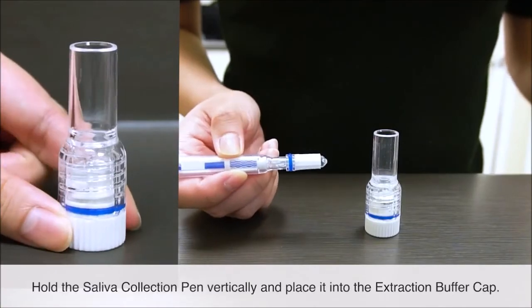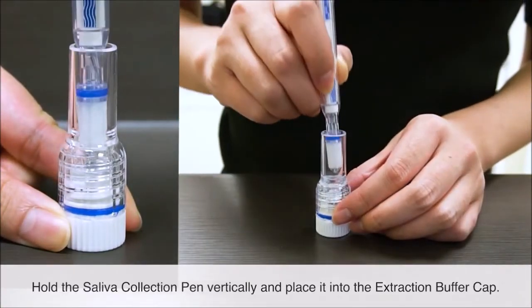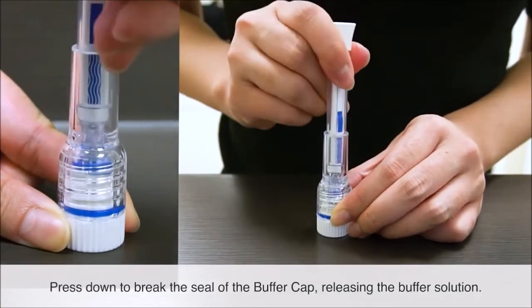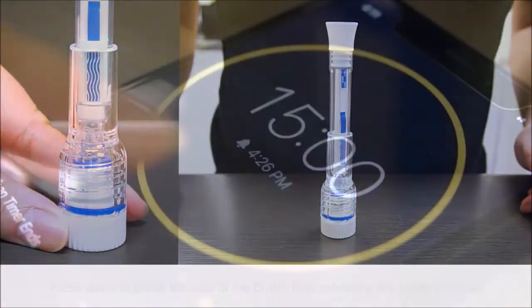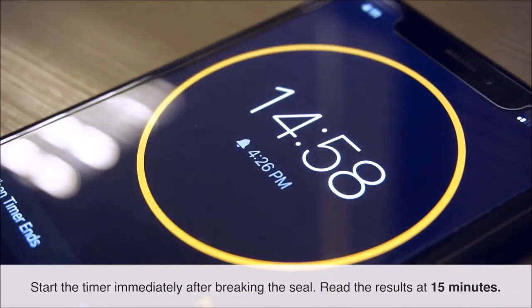Hold the saliva collection pen vertically and place it into the extraction buffer cap. Press down to break the seal of the buffer cap, releasing the buffer solution. Start the timer immediately after breaking the seal. Read the results at 15 minutes.